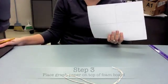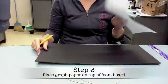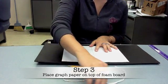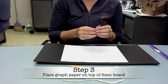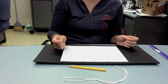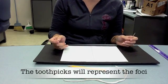We're going to take our graph paper and place it on top of the foam board and we're going to hold the paper in place by sticking the toothpicks through the paper and the foam board. But we're going to place the toothpicks where we want our two focus points on our ellipse to be.